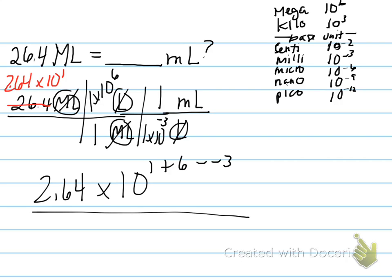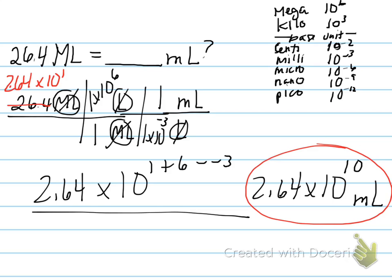So now, when we put it all together, we have 2.64 times 10 to the 1 plus 6 minus negative 3. That gives us a final answer of 2.64 times 10 to the 10th milliliters.